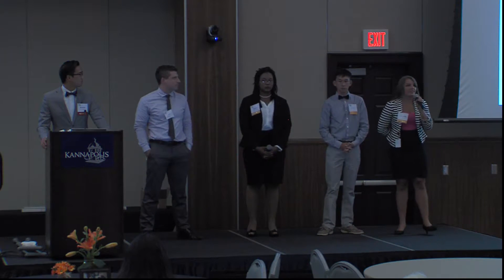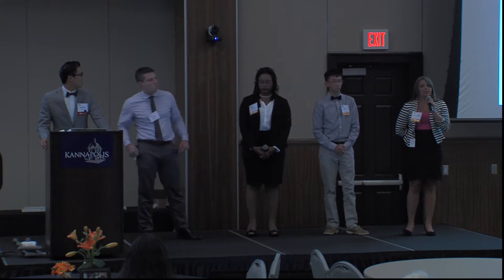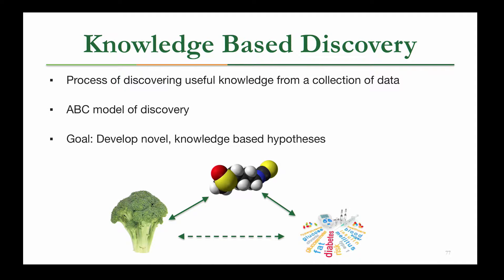We're the knowledge-based discovery group, but what does that mean? We take a collection of data and pull out useful knowledge to answer questions. To do that, we use the ABC model of discovery created by Don Swanson. He said: if we find an association between A and B, and we know there's an association between B and C, then perhaps there's an association between A and C. In our case, if we know there's an association between broccoli and sulforaphane, and between sulforaphane and diabetes, then perhaps there's an association between broccoli and diabetes.